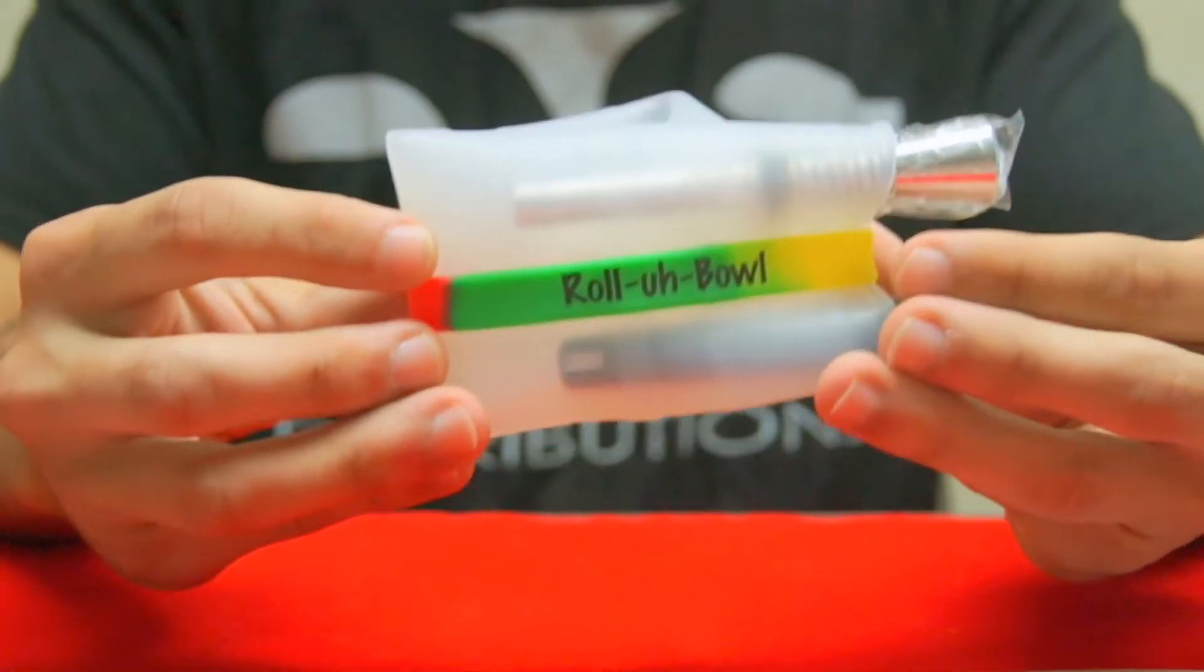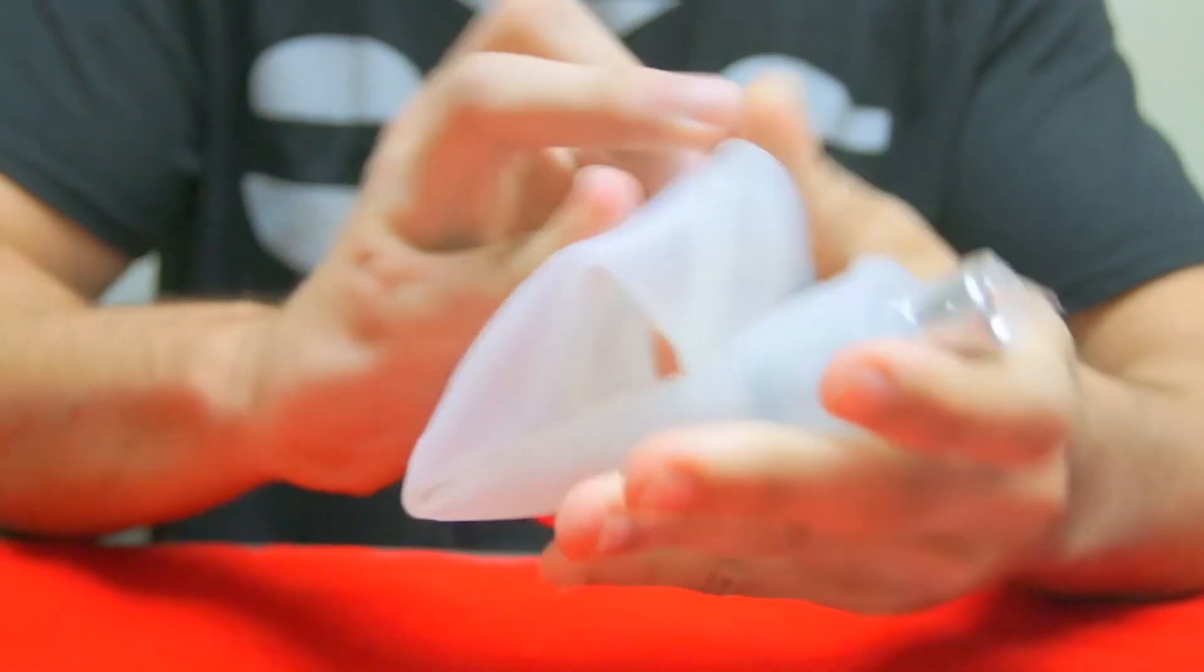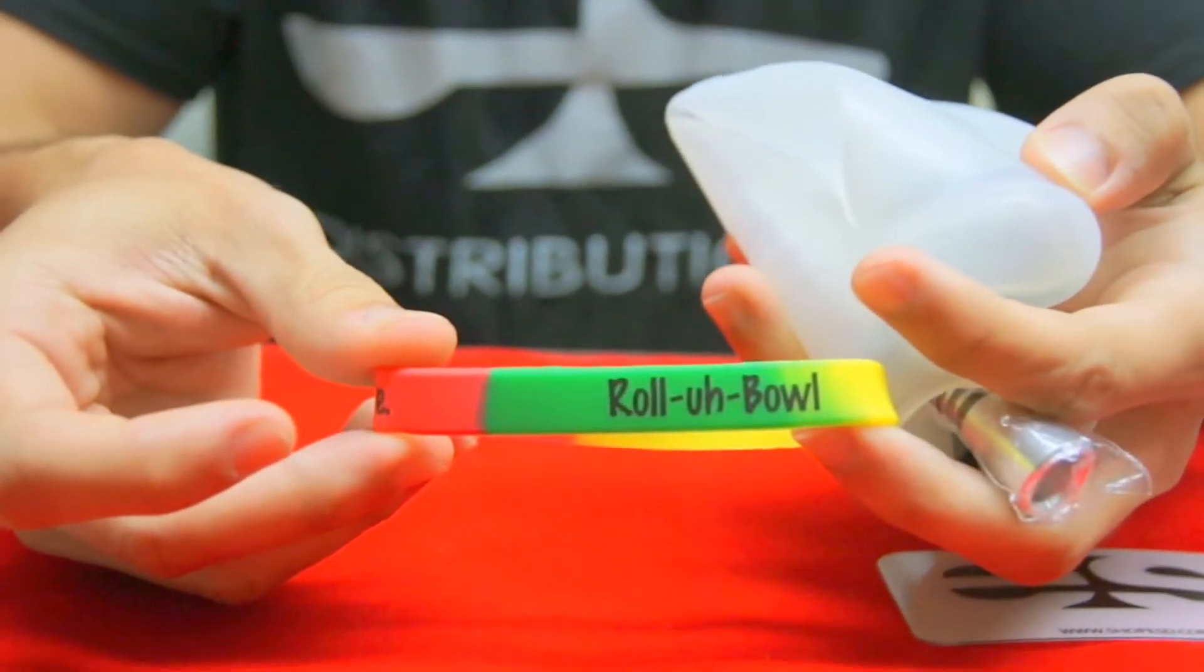Included with each Rollable is their custom smoky bubbles anywhere silicone band which comes in an assortment of colors.